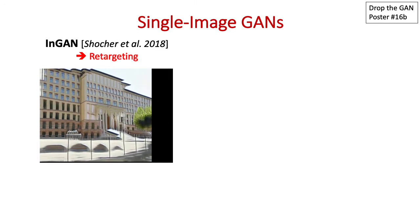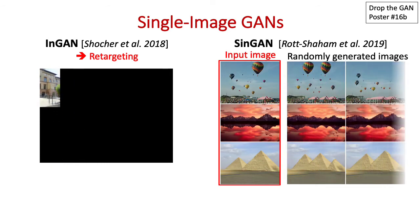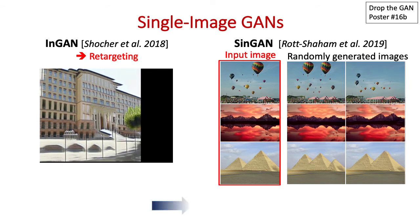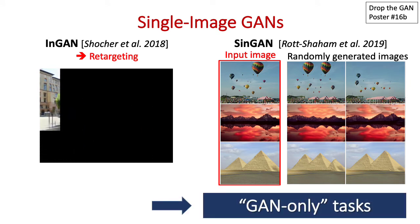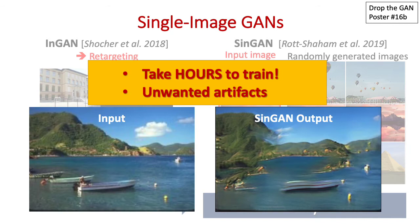First, InGAN showed it can perform the classical retargeting task, but then SinGAN introduced the ability to randomly generate diverse images based on a single input. This gave rise to many novel tasks considered as GAN only. However, these GANs come with a price tag. They take hours to train and produce many unwanted artifacts.